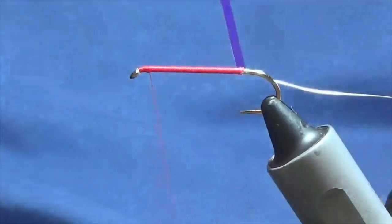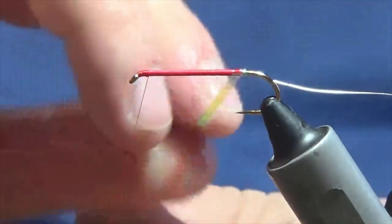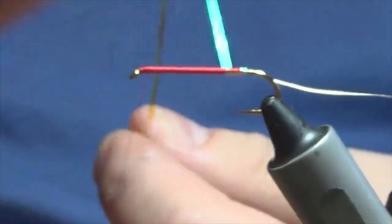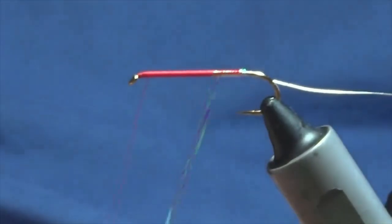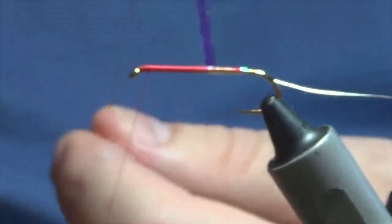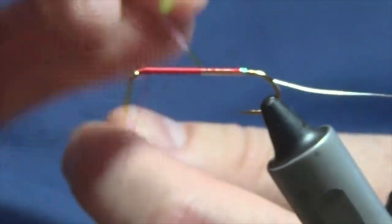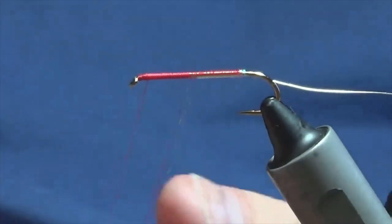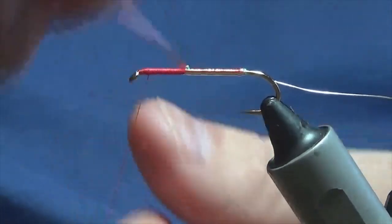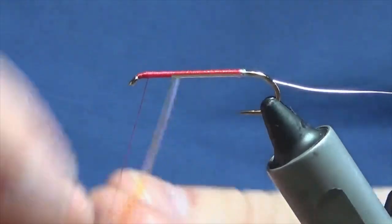Once you start to wind this up, you'll see the red showing through. You don't have to use red, you could use fire orange or chartreuse, many different colors you could use on the body. I'm just bringing the Obamaras tinsel up, one turn overlapping the other.